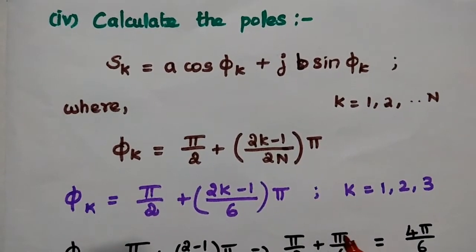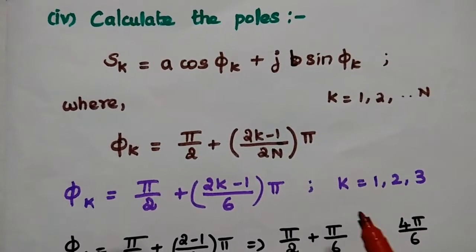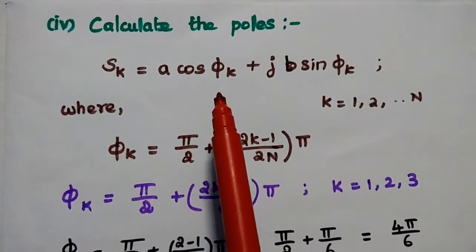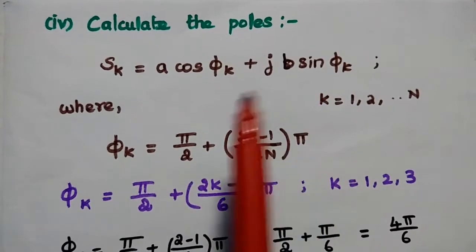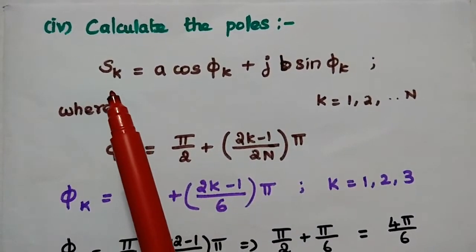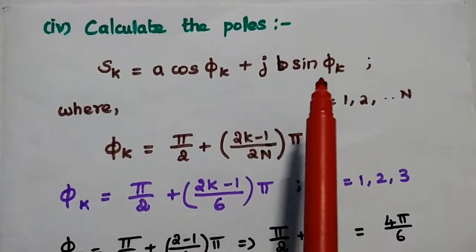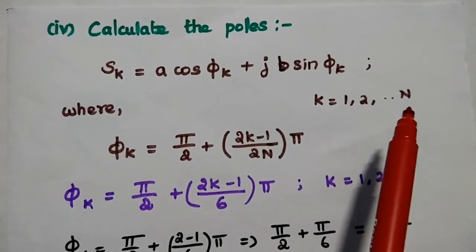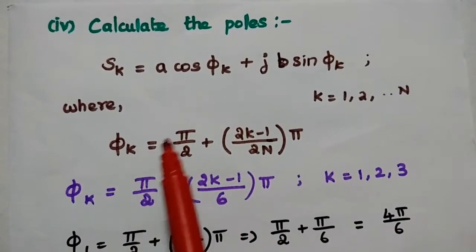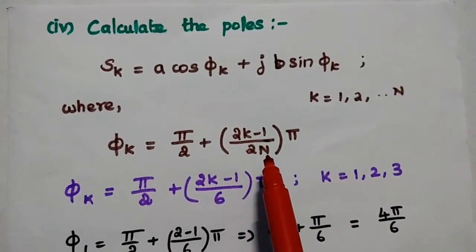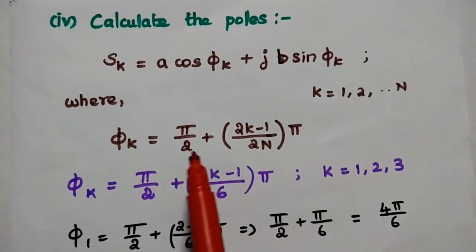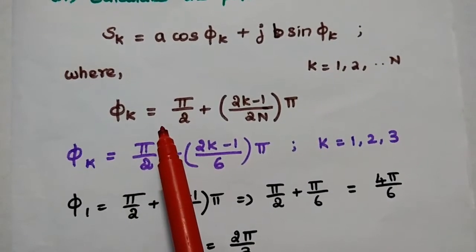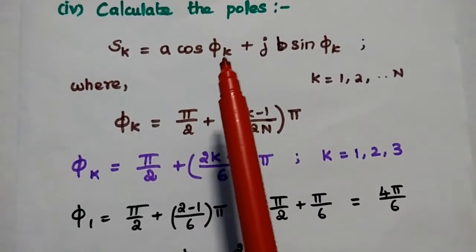The fourth step is to calculate the pole locations of the Chebyshev filter. The formula for the pole location is S_k = A·cos(φ_k) + j·B·sin(φ_k), where k varies from 1 to N. Here φ_k = π/2 + ((2k − 1) / 2N) × π. First, we find the values of φ_k for k = 1, 2, 3.